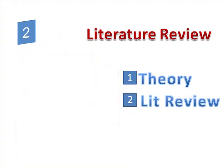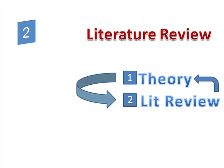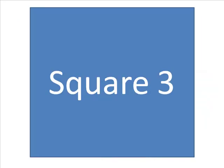In square one, you described your theory of intelligence. Square two is all about input from others — what have they said intelligence is? What studies have been done? What techniques have been used? If what others say impacts your thinking, go back to square one and modify it, then come back to square two and update your literature review. When you think you have an idea worth pursuing, move on to square three.